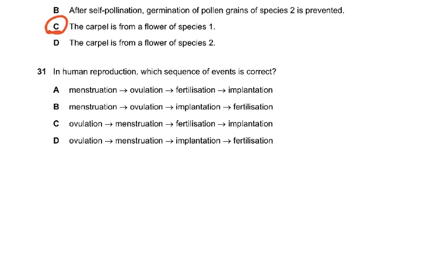Question number 31: in human reproduction, which sequence of events is correct? First there has to be ovulation, then fertilization, and then implantation — and menstruation comes before ovulation. The answer is A. It cannot be implantation before fertilization; fertilization must take place before implantation. You must know that fertilization has to take place before implantation.